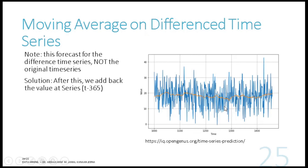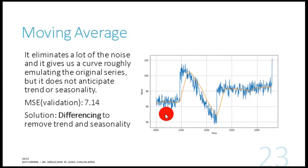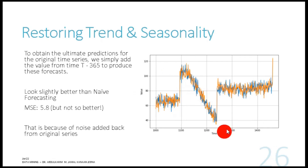After applying moving average on the differenced time series, we get a smooth line with noise eliminated. To get back to the original scale, we add back the original values that were subtracted. This gives a model that looks much more like the original figure compared to the plain moving average. However, the orange line is no longer smooth because we picked up the noise from the original data when adding it back. Still, the MAE is slightly better than naive forecasting.